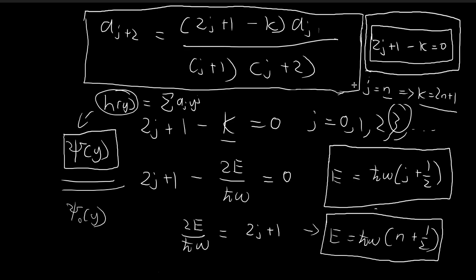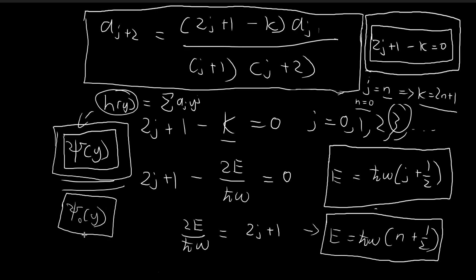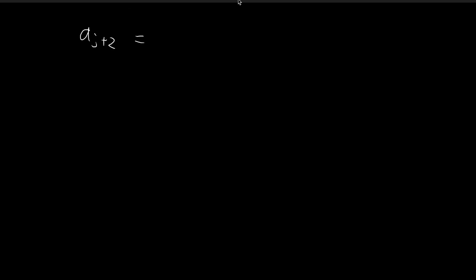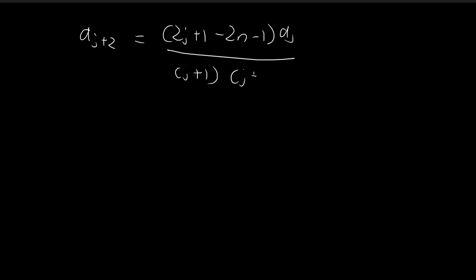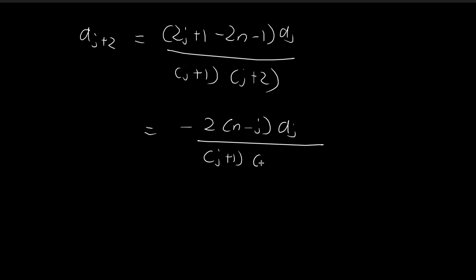Now that we've found the energy levels, let's use the recursion formula to generate the xi(y)'s. I'm going to change the recursion formula slightly — from being in terms of k to being in terms of n, the value at which we want the formula to stop. After a slight rearrangement, we can use this to generate solutions.